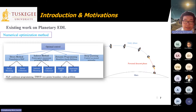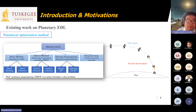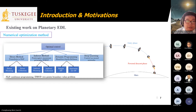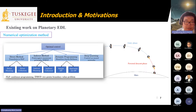There exist multiple methods to handle the optimal control problem, such as direct methods and indirect methods. In the indirect method, we use the Pontryagin optimal control theory to transfer the optimal control problem to a two-point boundary value problem, but this is typically very sensitive to the initial guess of the Lagrange multipliers. In our work, we focus on the direct method, which transfers the continuous-time control problem to a nonlinear program, and we also combine it with machine learning methods to improve efficiency.